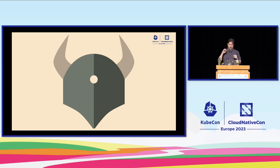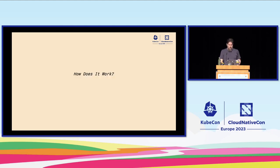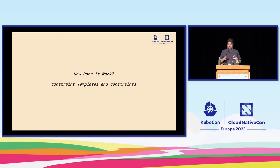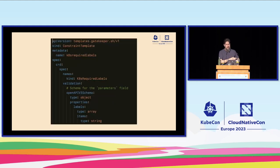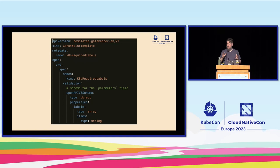Gatekeeper introduces a couple of new concepts: constraint templates and constraints. These are new resources Gatekeeper adds to your cluster that allow you to define policies and then apply those policies to certain sets of resources. The constraint template allows us to define parameters — what data we want to use as configuration. In this example we have a schema that defines a parameters field with a labels field underneath that's an array of strings, so we're going to look at how we can require labels on things coming into the cluster.